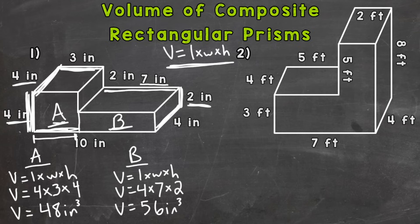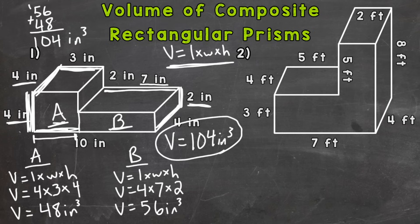So now to wrap up the problem, I'm going to go to the top left of the screen where I have some room here. We need to do B, which is 56, plus A, 48, to get the total volume. And we get to 104 cubic inches. So our answer for number one is 104 cubic inches. All right, let's take a look at number two.